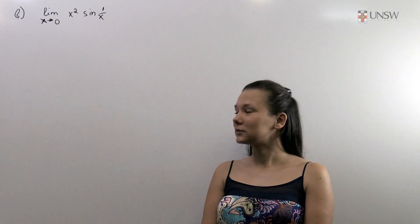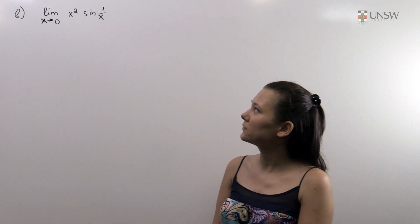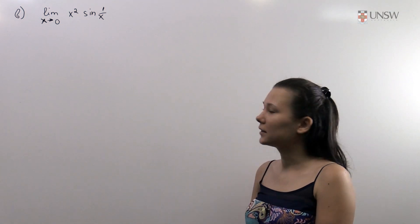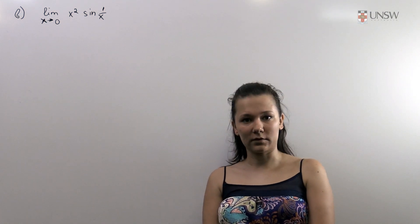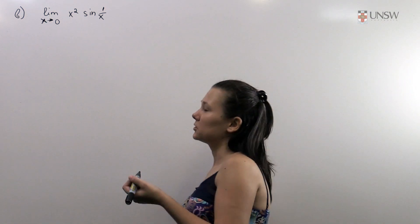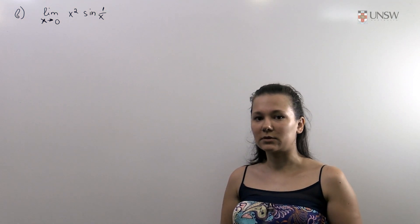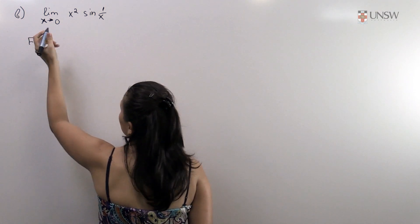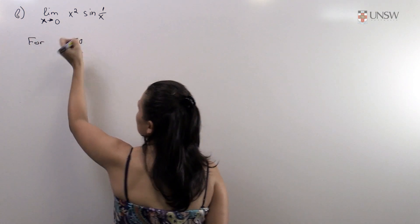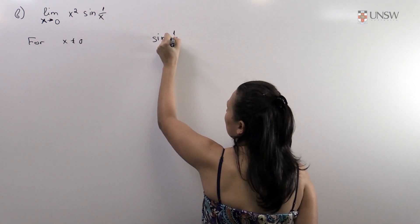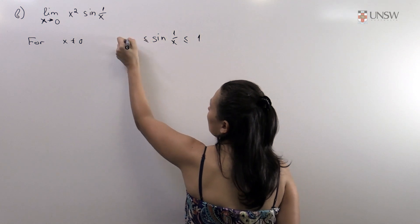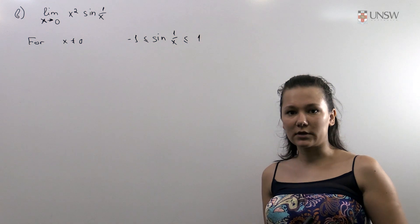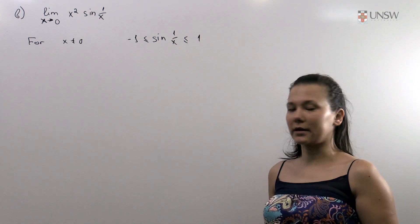In the second part of this video we will be looking at a slightly different limit. We have to find the limit when x goes to 0 of x squared sine 1 over x. Again we should use the pinching theorem, so we need to find an estimate from below and from above. As before, for non-zero x, sine 1 over x is between minus 1 and 1. Since x squared is always a positive number, we can simply multiply the inequalities by x squared.